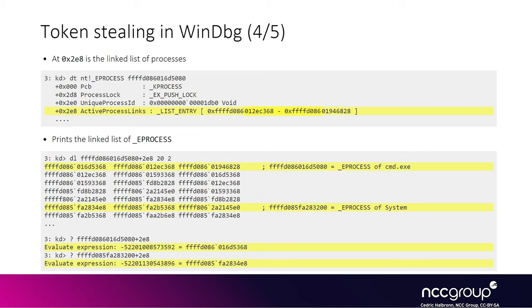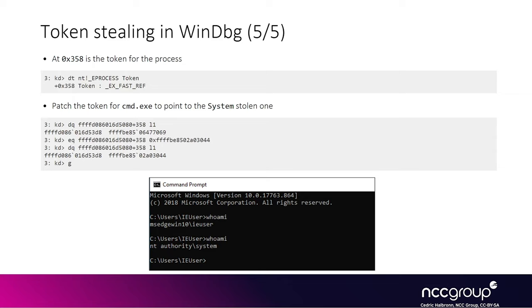This slide shows how to manually find the EPROCESS pointers for cmd.exe and the SYSTEM process, assuming you already have a pointer inside the linked list of EPROCESS. The linked list uses the LIST_ENTRY structure, which is common on Windows, located at offset 0x2E8 on this particular Windows version. Using the dl command, we can see all elements of the linked list and find both the EPROCESS for cmd.exe and the EPROCESS for the SYSTEM process. The token pointer is at offset 0x3E8.